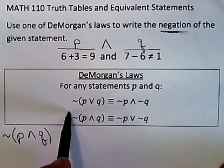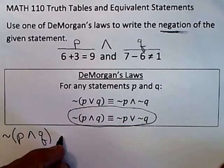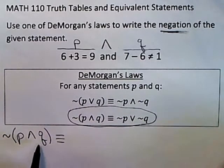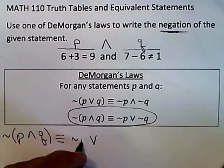That's where DeMorgan's Law comes in. To negate an AND you use this result. The negation of an AND is an OR and you're negating the P and you're negating the Q.